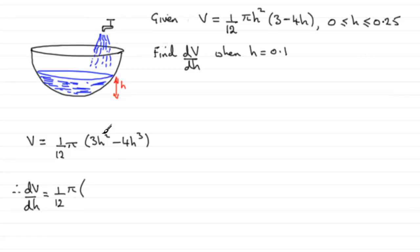So for the first term here, we're just going to get 6h. And for the second term here, minus 12h².